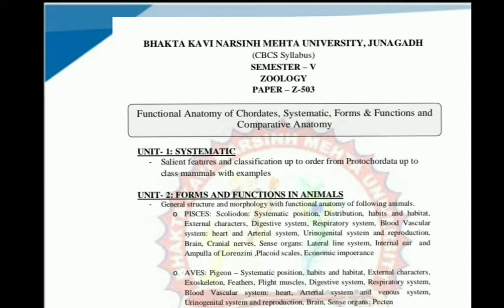Now we are going to discuss the brief information of the classification chart of phylum Chordata. Phylum Chordata is divided into total 2 groups. Group No. 1 is called Craniata, and Group No. 2 is called Acraniata or proto-chordates. Now discussing Group No. 2, Acraniata or proto-chordates are divided into 3 main sub-phyla: Hemichordates, Urochordates, and Cephalochordates.